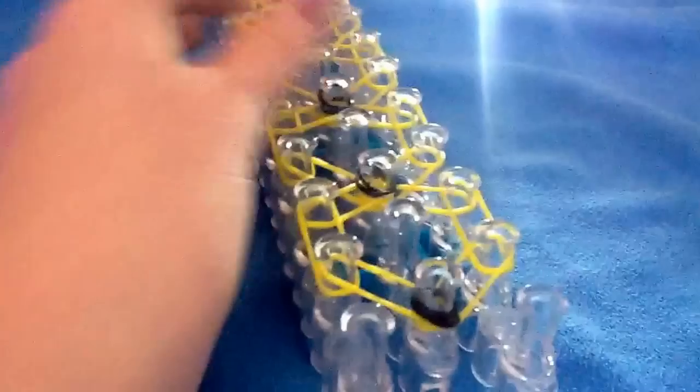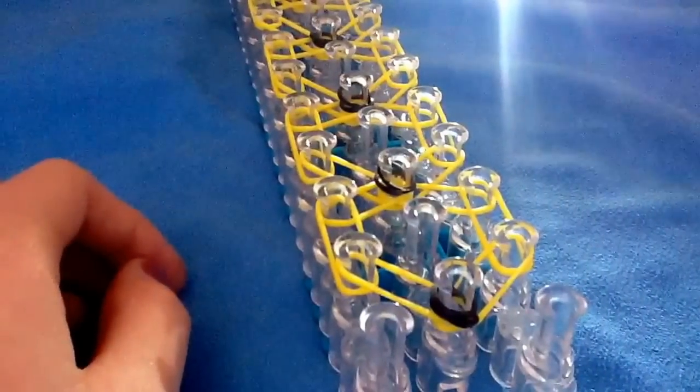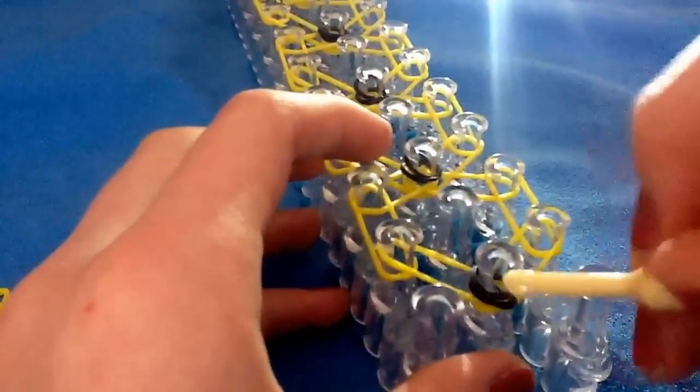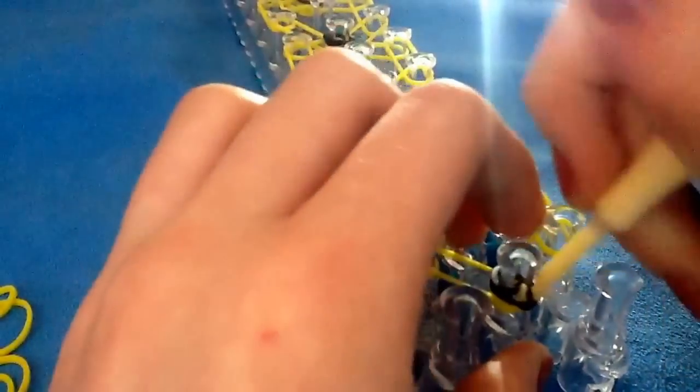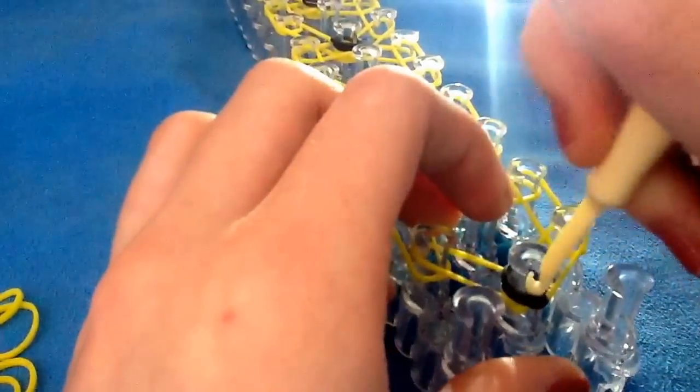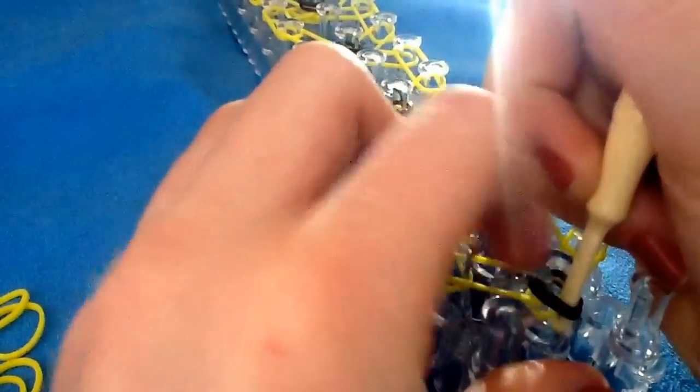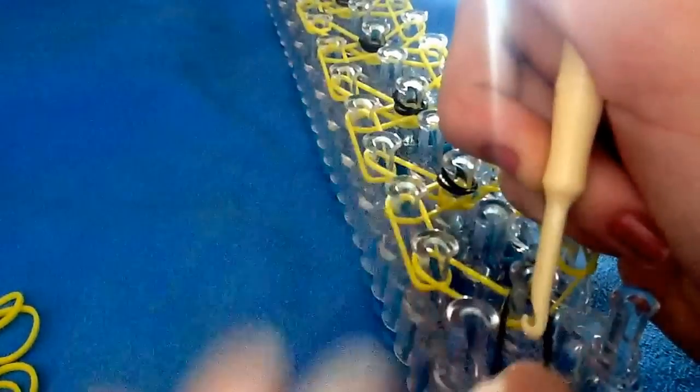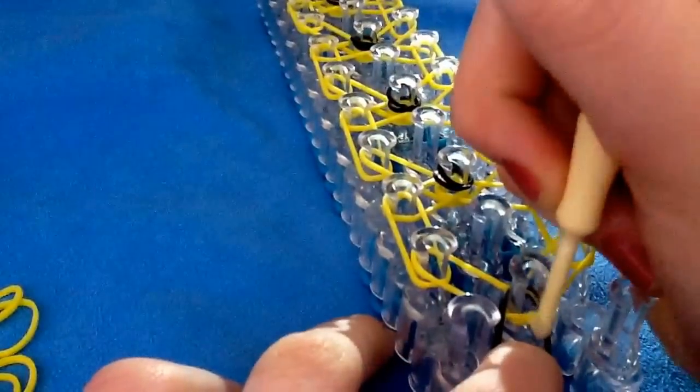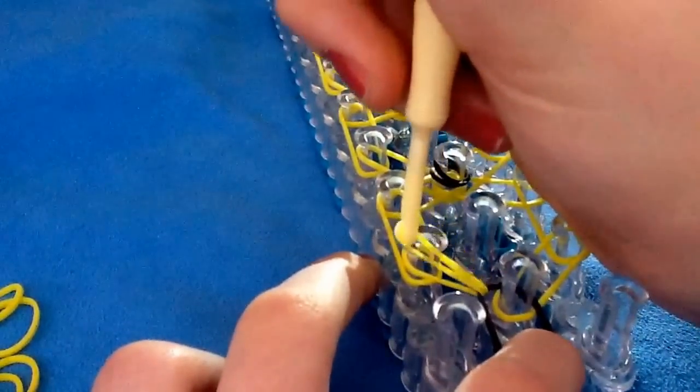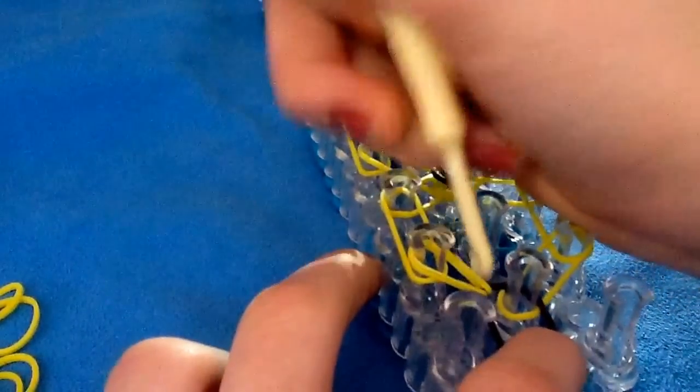Next, you're going to flip your loom around and grab your hook. You're going to hold back this cap band right here. You can hold it back with your fingers just like that. And you're going to grab one rubber band and loop it back onto itself.